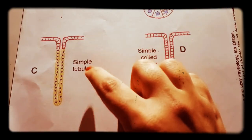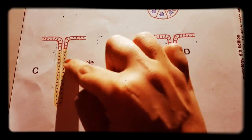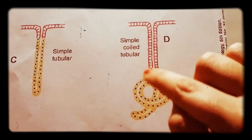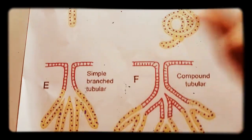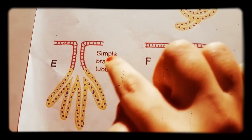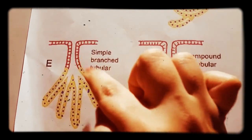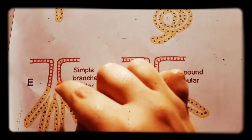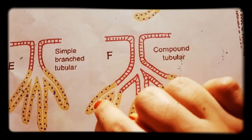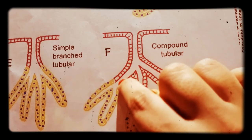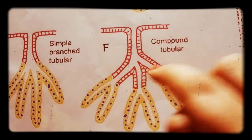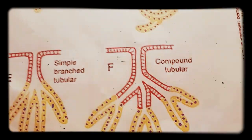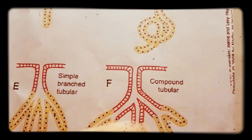Looking at the diagrams: in simple tubular, the secretory unit shown in yellow is in tubular form with a single duct. In simple coiled tubular, the secretory unit is coiled but still a single duct. In branched tubular, the secretory unit branches but remains a single main duct. In compound tubular, there are terminal ducts that merge into a main large duct — making it a compound tubular arrangement.